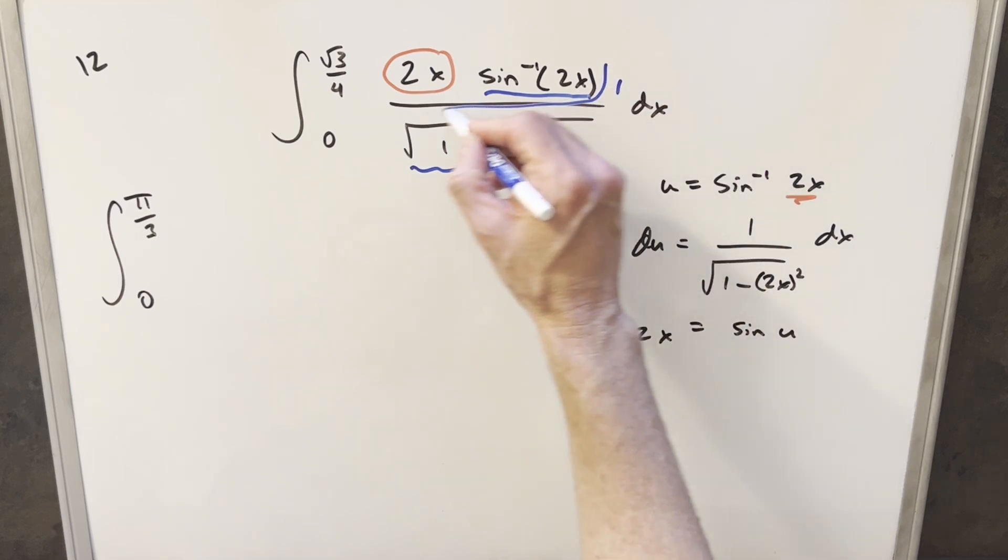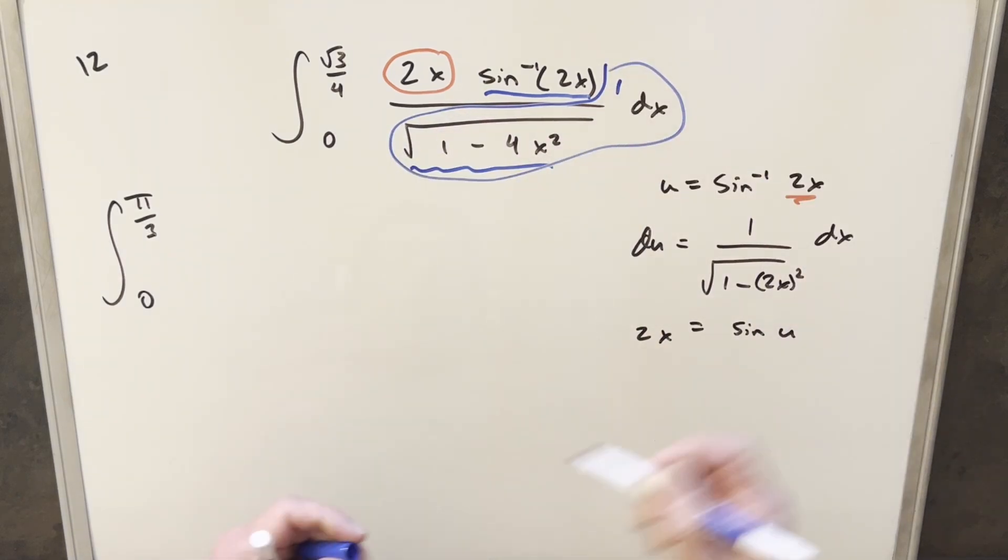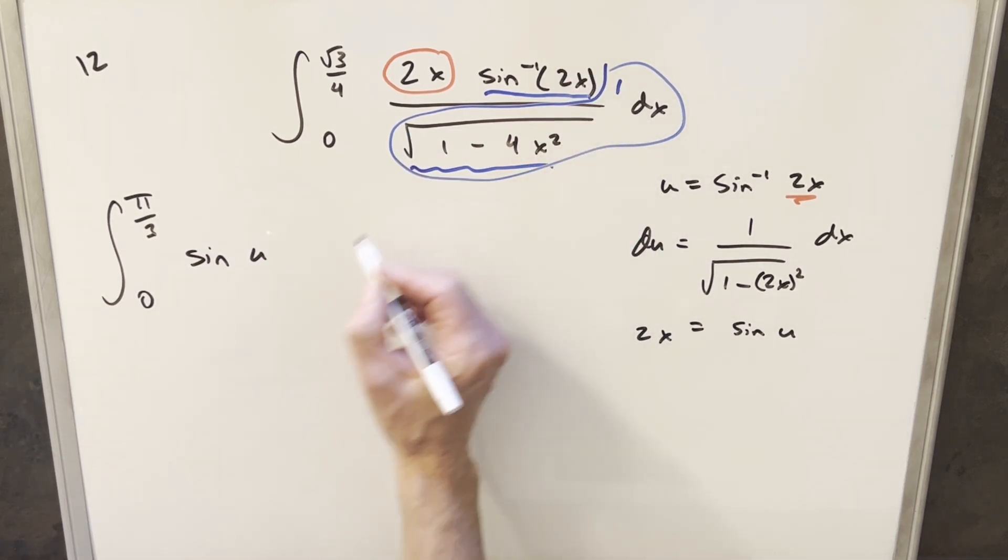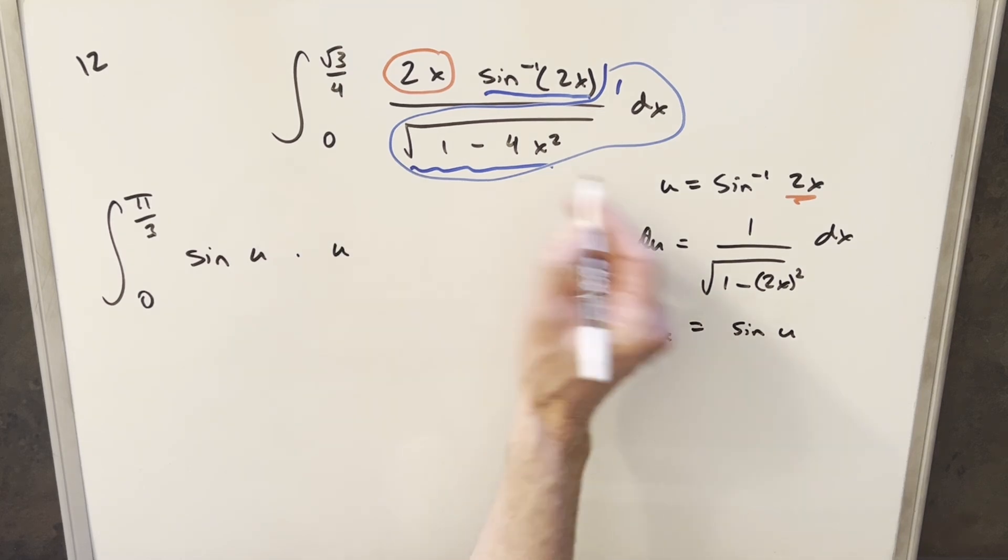Then going ahead with the substitution, just noticing that we have our du, all this stuff out here matches this. So our 2x value first is going to be sine of u, and then this is going to be u here. So we're multiplying by u and everything else is du.